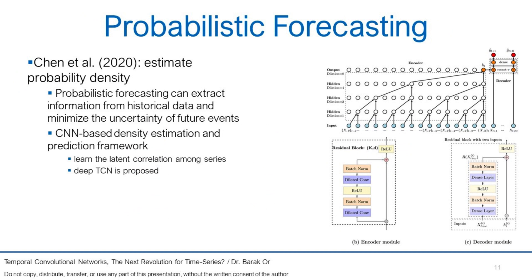Probabilistic Forecasting: a novel framework designed by Chen et al. in 2020 can be applied to estimate probability density. Time series prediction improves many business decision-making scenarios, for example, resources management. Probabilistic forecasting can extract information from historical data and minimize the uncertainty of future events. When the prediction task involves millions of related data series, as in the retail business, it requires prohibitive labor and computing resources for parameter estimation. To solve these difficulties, they proposed a CNN-based density estimation and prediction framework. Their framework can learn the latent correlation among series. The novelty in their work is the deep TCN they proposed, as presented in their architecture. The encoder-decoder module's solution may help in the design of practical large-scale applications.